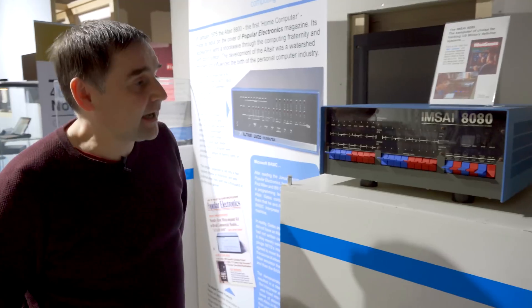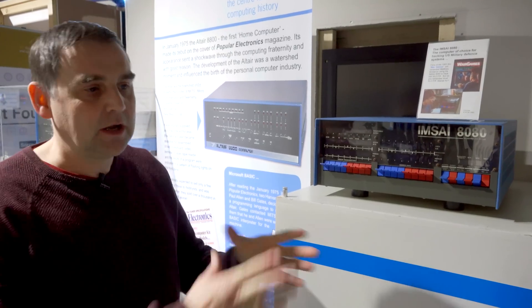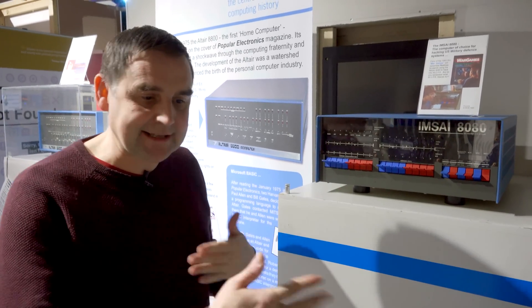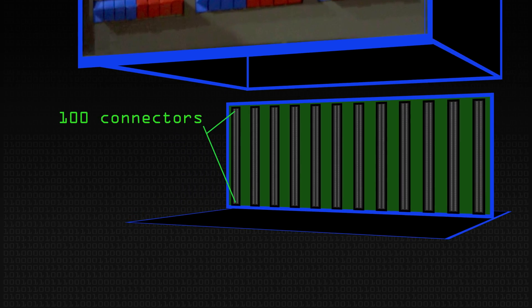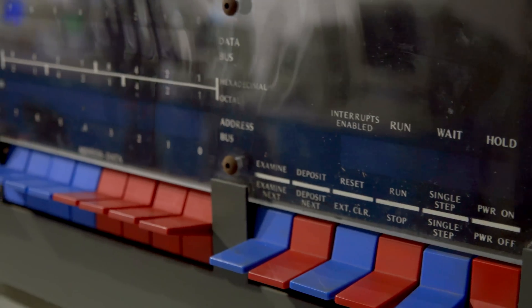The MSI 8080 was a machine that came out not long after the Altair. It's an S100 bus-based machine, so S100 means that it had a connector, it had a backplane, but there was a hundred connections which carried the data bus, the address bus and all the control lines for the processor. The backplane didn't do anything, it was just a bunch of connectors. You'd have a CPU board, maybe a RAM board, maybe a serial board, you could expand it.